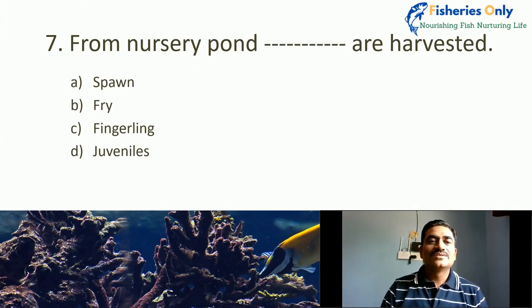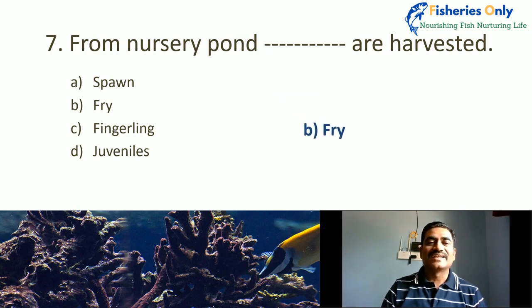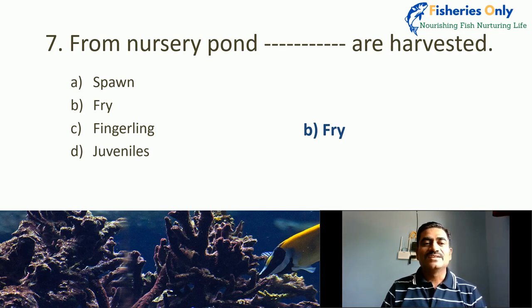Seventh MCQ: From nursery pond, what are harvested? Nursery pond is where fish seed is reared up to fry stage. That is why fry are harvested from the nursery pond. The correct answer is fry. Spawn, fry, fingerling, and juveniles are the stages of fish seed.